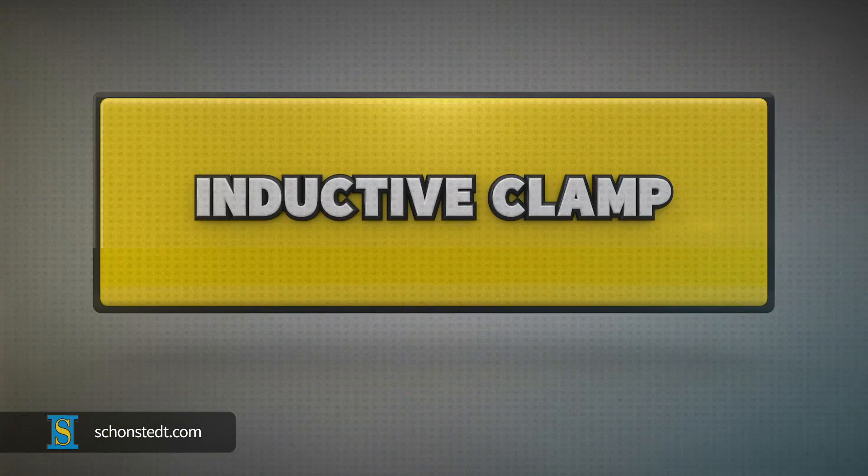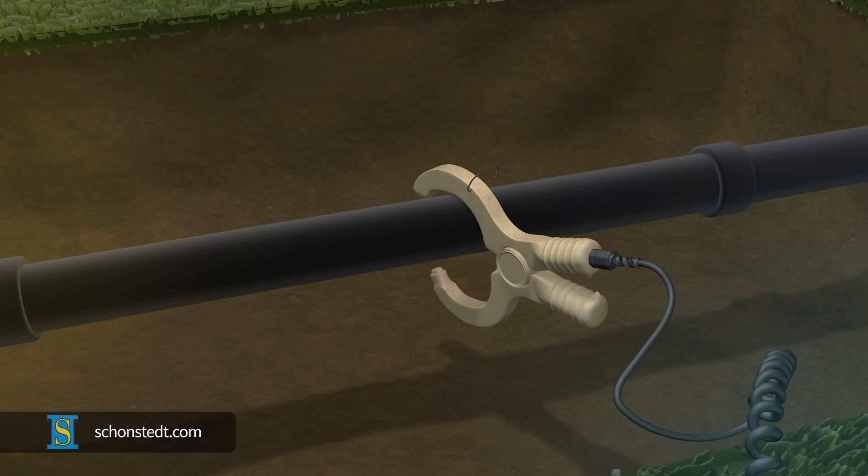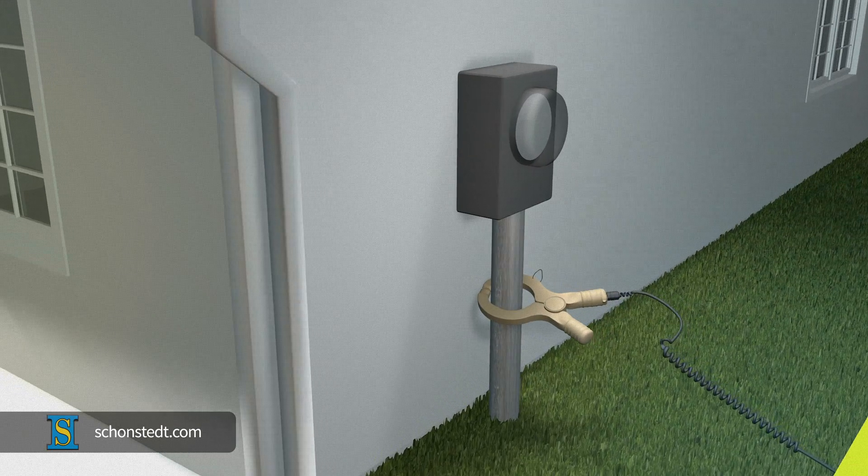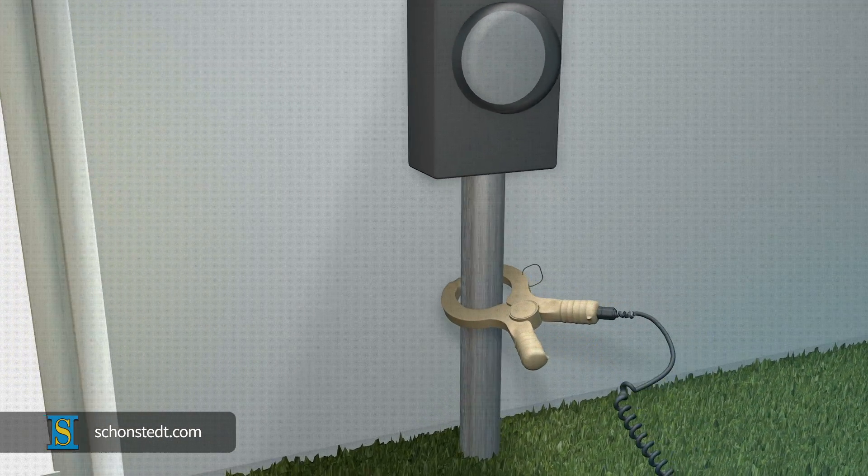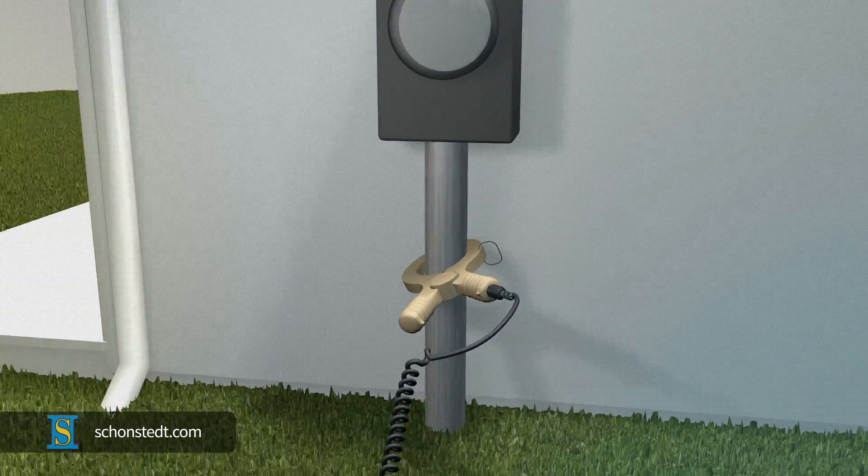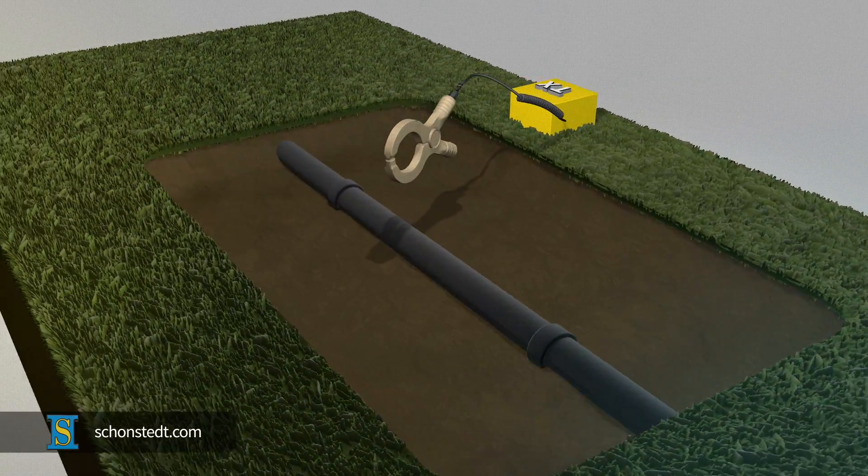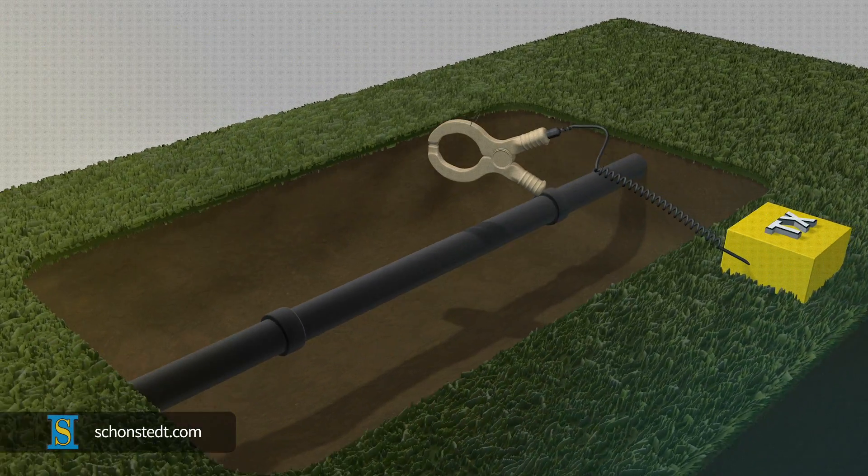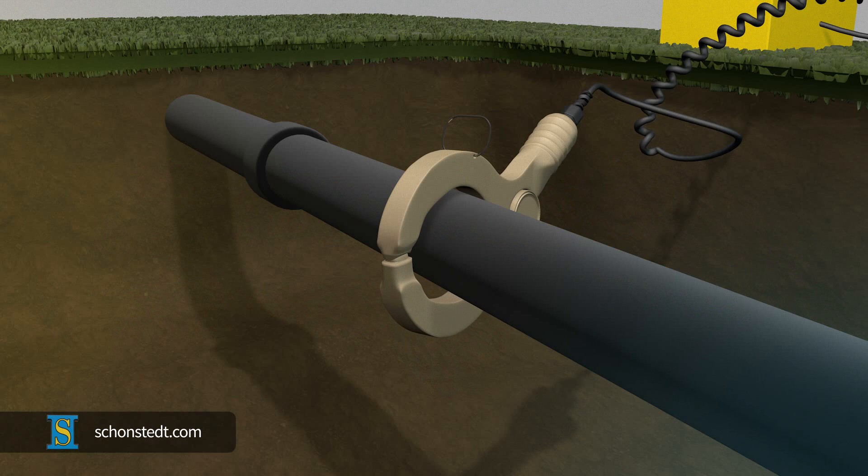The inductive clamp method of connection requires you to apply a clamp around the pipe or cable. In some cases, the pipe or cable can be found next to buildings or on utility poles. Sometimes you'll need to dig to expose the line and be able to apply the clamp. It must close fully around the conductor.